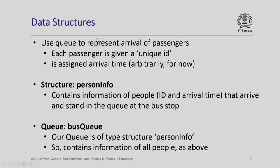First we discuss the data structures required to simulate the bus queue. We will use queues to represent the arrival of passengers. Each passenger is given a unique ID — an artificial ID that helps us identify the person who leaves and calculate the corresponding waiting time. Each person is also assigned an arrival time, which for now is done arbitrarily. We store this information in a structure called person_info, which contains the person ID and arrival time.